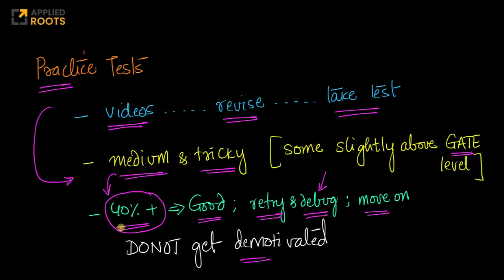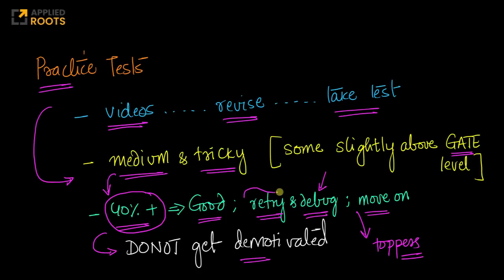Most importantly, if you're scoring 40 to 50% marks, please do not get demotivated. It's actually good — to tell you the truth, a lot of toppers in the last couple of years have actually scored about 40 to 50% marks in these practice tests. By retrying and debugging why they were not able to solve, they consistently improved their scores and got to 70+ marks in the final GATE exam. So you're very similar to many toppers — there's nothing to get demotivated about. Just keep going forward.